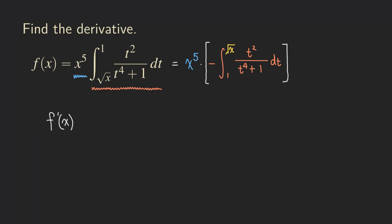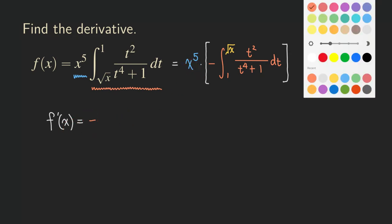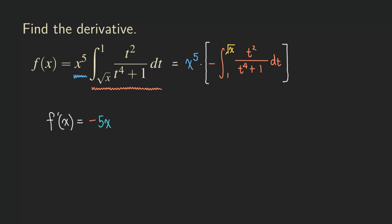So f prime is going to be the derivative of the first function, but we do not touch the second function — we just copy it. We need to differentiate the blue function here. I'll write down the minus sign first, since I usually keep all constant multiples in the front. Then what about x to the fifth when we differentiate? Using the power rule, that gives us 5x to the fourth.